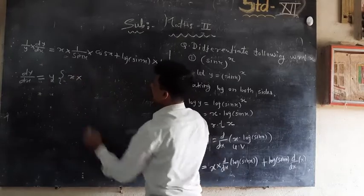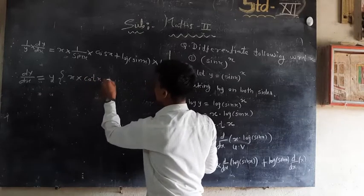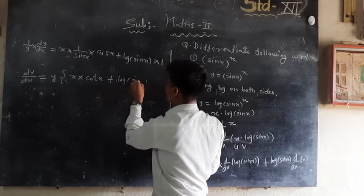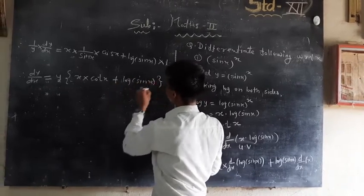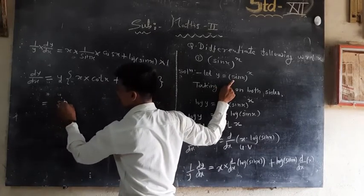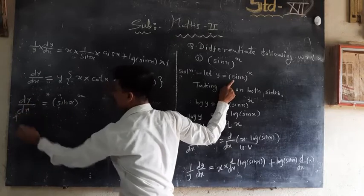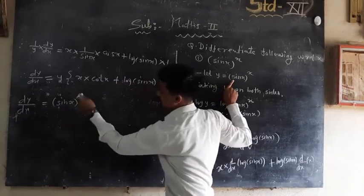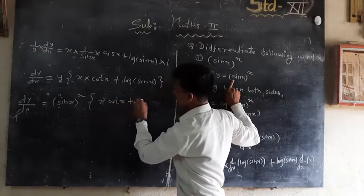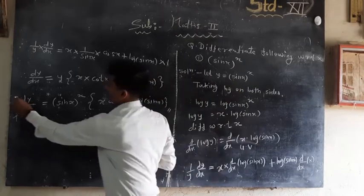Here, x · cos(x)/sin(x) is cot(x). So we write: dy/dx = y · {cot(x) + log(sin x)}. Since y = sin(x)^x, the final answer is: dy/dx = sin(x)^x · {x·cot(x) + log(sin x)}.